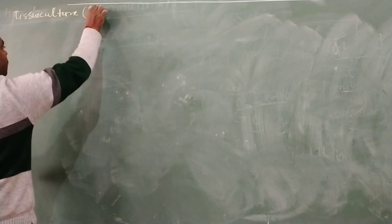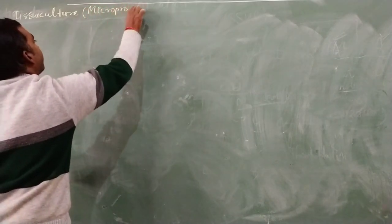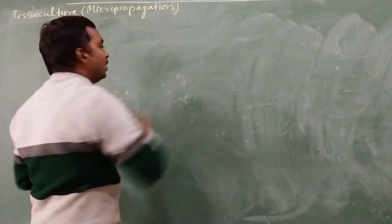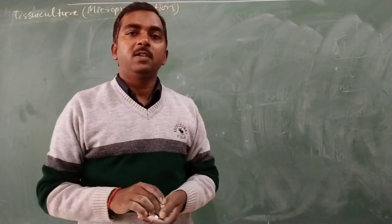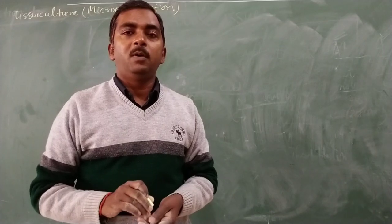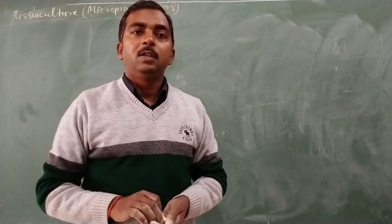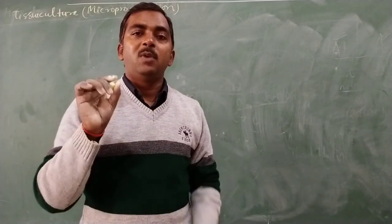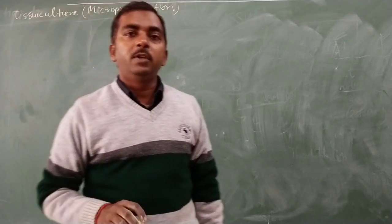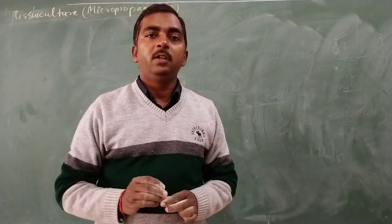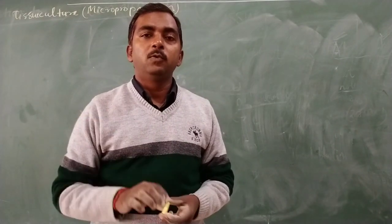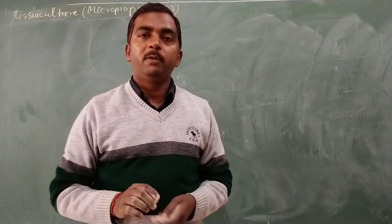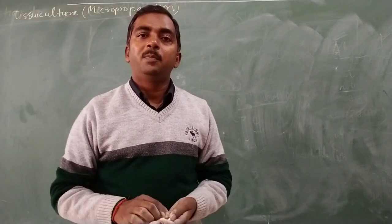In the previous video lecture we discussed tissue culture, also known as micro-propagation. Tissue culture is called micro-propagation because this kind of propagation takes place with the help of a microscope in the laboratory, using a small or micro element of the plant from the growing region. In tissue culture we require a cell or a small tissue from the growing or dividing region of the plant's body. This is the reason why it is called micro-propagation.